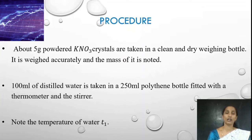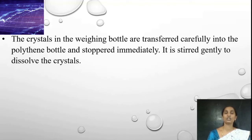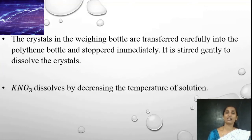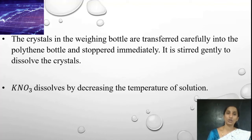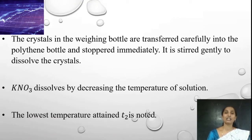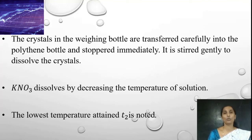Once the temperature of the water is recorded, the next step is to carefully transfer the crystals of potassium nitrate from the weighing bottle into the polythene bottle and stop it immediately. Stir gently to dissolve the crystals. Once the potassium nitrate dissolves, the temperature of the solution decreases, which can be felt when holding the polythene bottle. Once the temperature remains constant after complete dissolution of potassium nitrate, note down the temperature of the solution — it will be the lowest temperature. This is recorded as T2. With T1 and T2, we can proceed to the calculation to determine whether heat is absorbed or liberated.